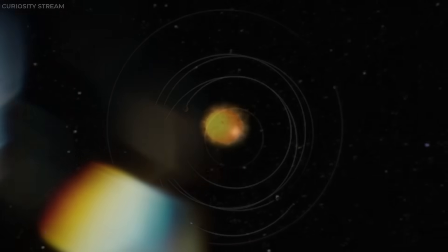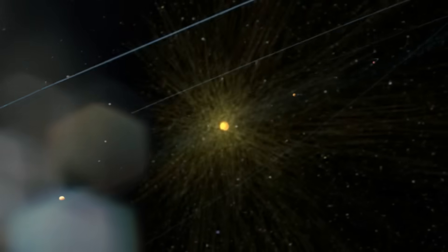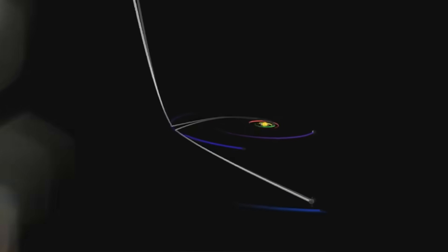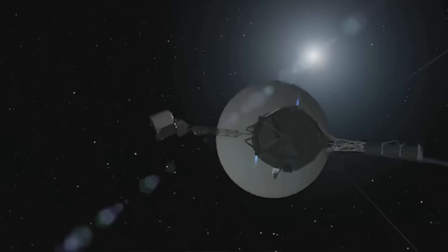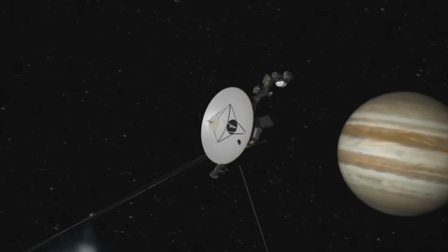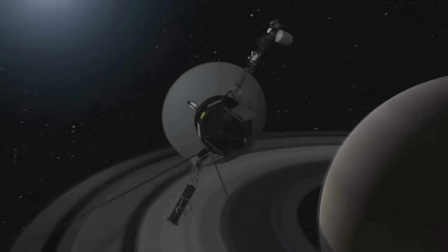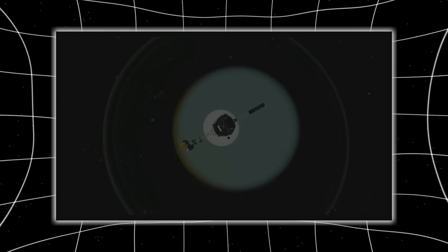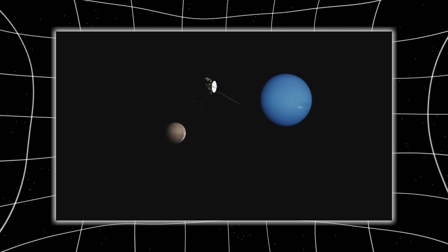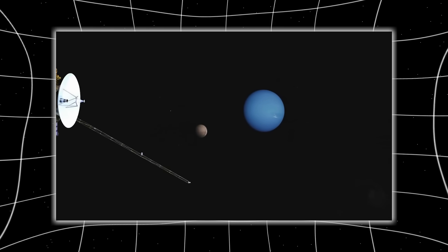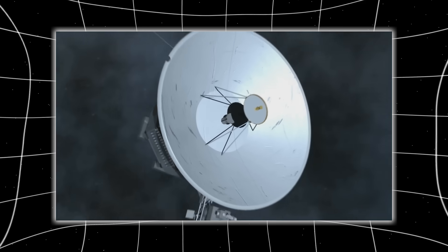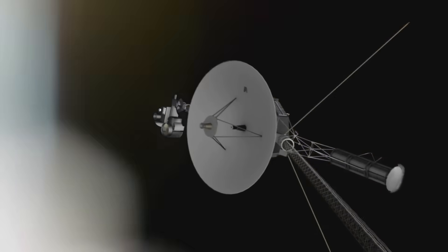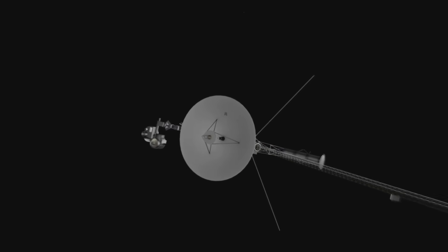During solar maximums, it expands, pushing the galactic environment away. During minimums, it contracts, exposing our system to more radiation. This dynamic behavior meant the boundary wasn't static. It was alive. Voyager 2 found that it crossed this frontier at a different distance, 121 AU instead of 119 AU. This discrepancy wasn't random. It revealed the boundary breathes, flexes, adapts.